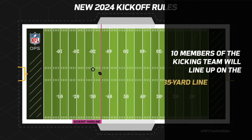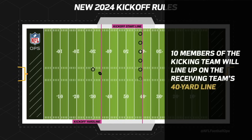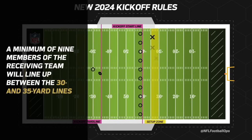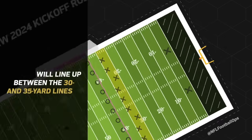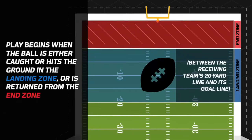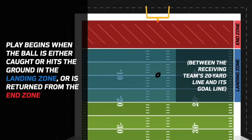The kickoff will start at the 35 yard line, and the circles you see are members of the kickoff team — they're actually in the opponent's territory at the 40 yard line. The blockers of the kickoff return unit can only be between the 30 and 35 yard line, and none of the players can move until the football is touched or hits the ground inside the landing zone.